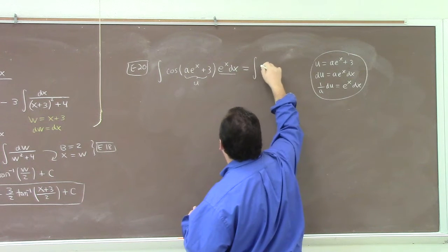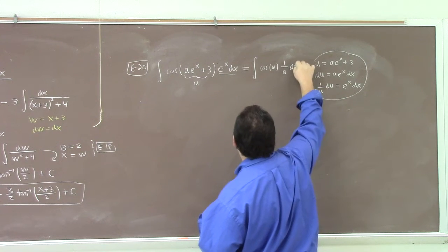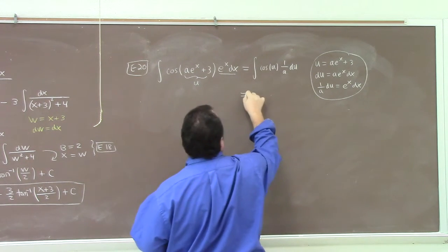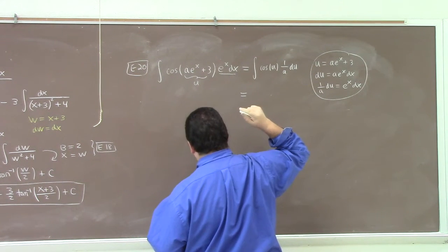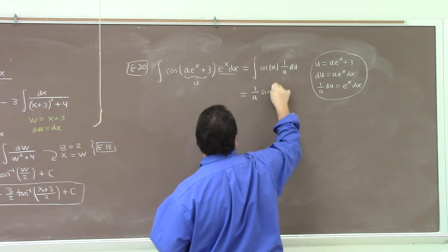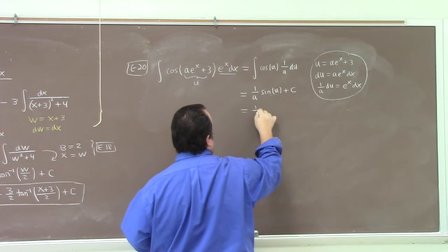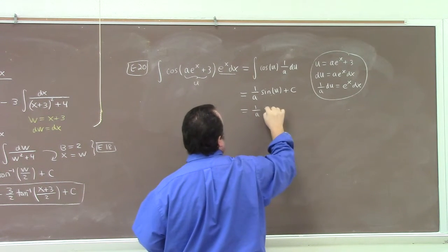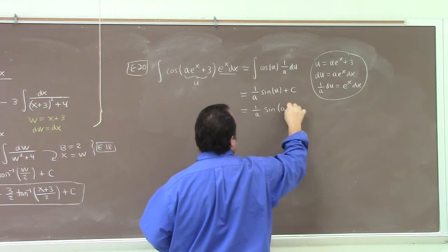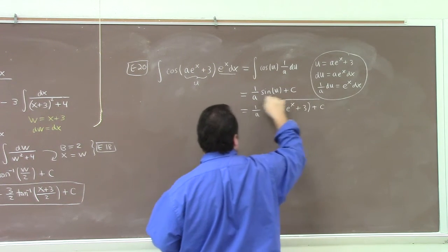So this is the integral of cosine of u times 1 over a du. Integral of cosine is sine, right? So 1 over a sine of u plus a constant. 1 over a sine of a e to the x plus 3 plus a constant. There you go.